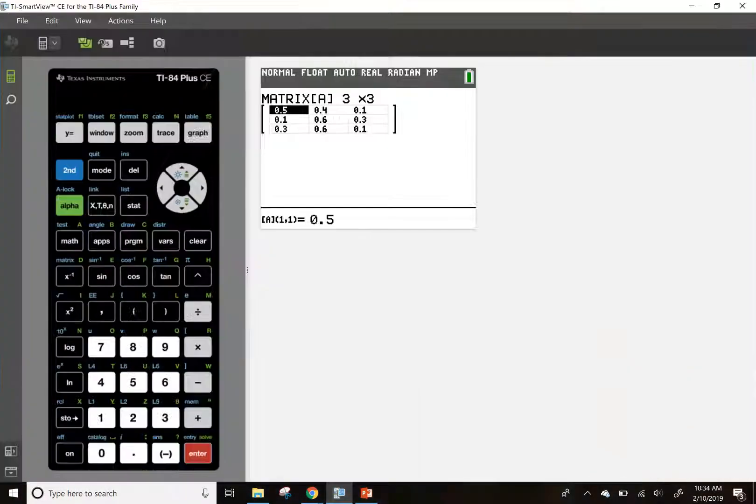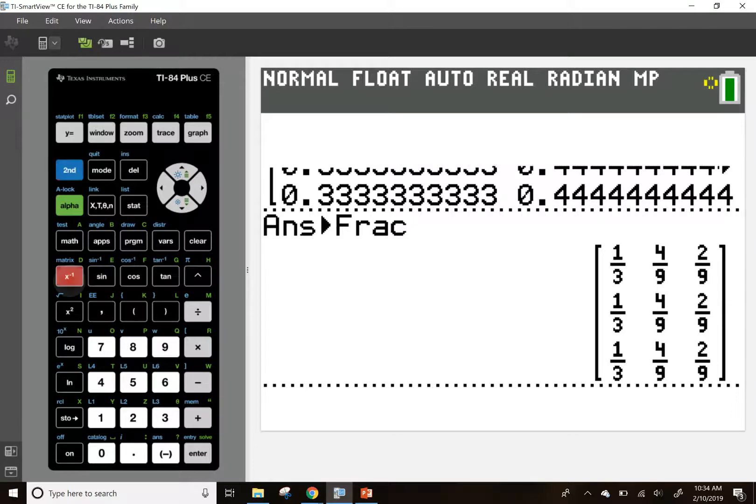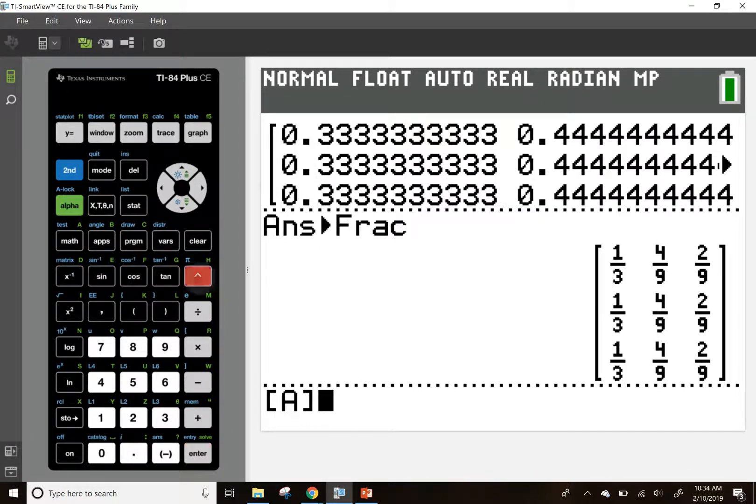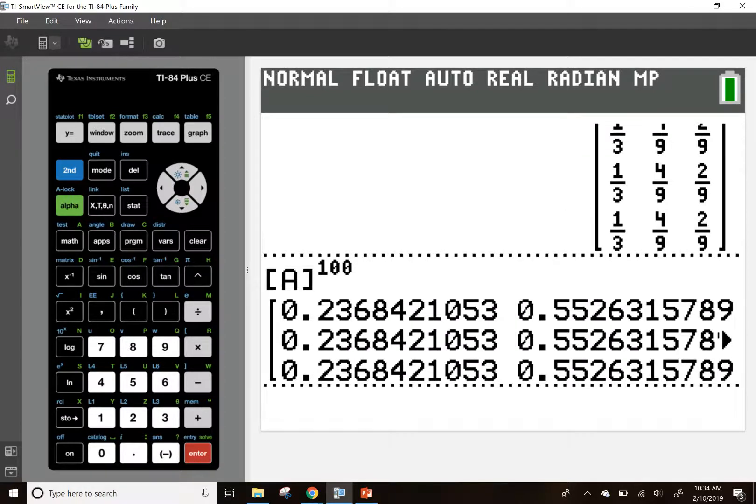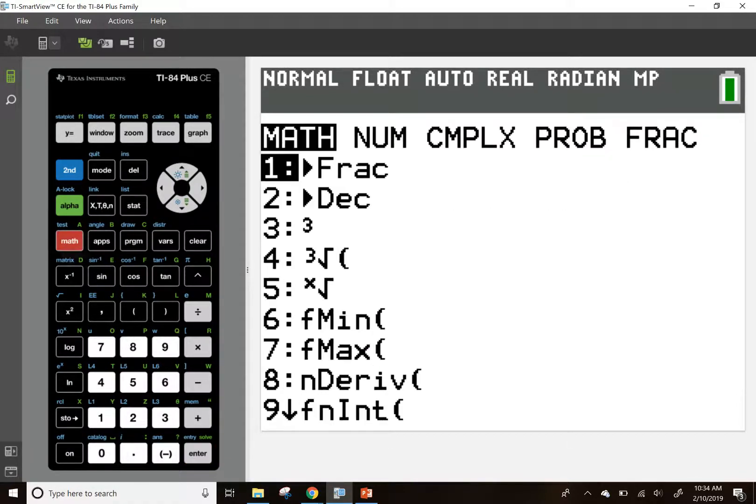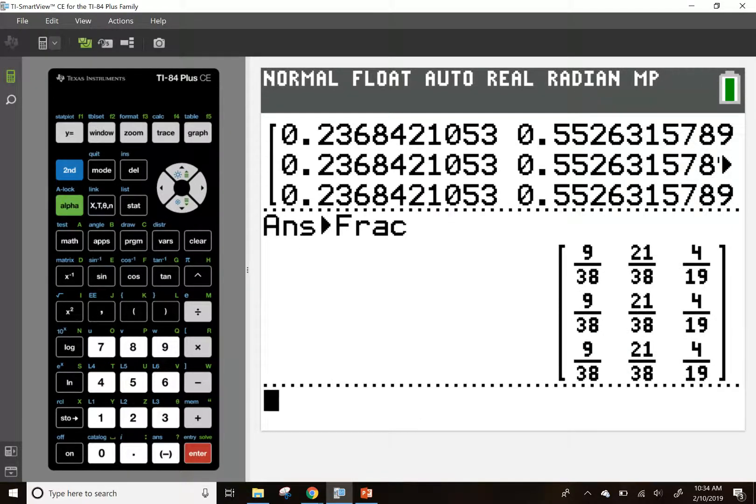I think that's right. Yep. So, now let's take that matrix, raise it to, let's say, the 100th power. And, okay. So, you can see that's what they're looking like before. Let's see if this comes into good fractions. Hopefully, it does. Yeah. So, there you go. So, our stable vector will be 9/38ths, 21/38ths, and 4/19ths. There you have it.